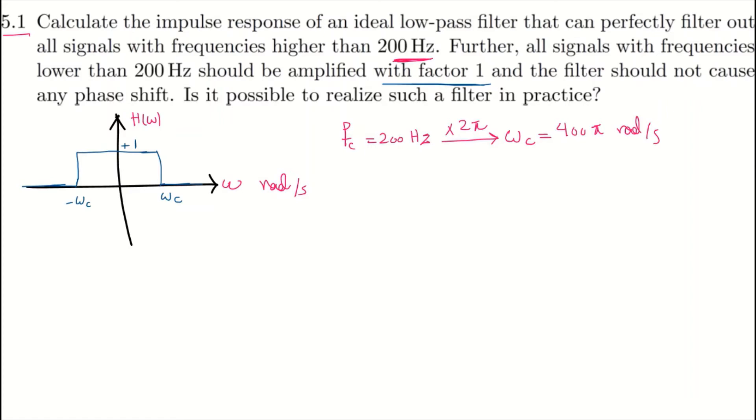I can write the expression for this filter like this. H of omega is 1 if omega is in the range of minus 400 pi to 400 pi. And it is 0 if omega is larger than 400 pi or smaller than minus 400 pi. I can write this in a better form: absolute value of omega smaller than 400 pi, and absolute omega larger than 400 pi.